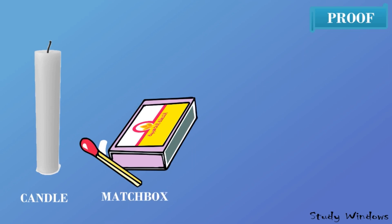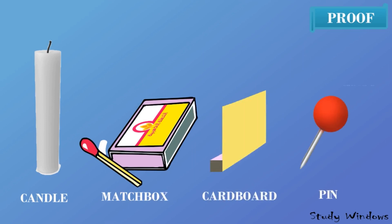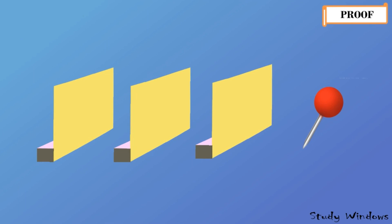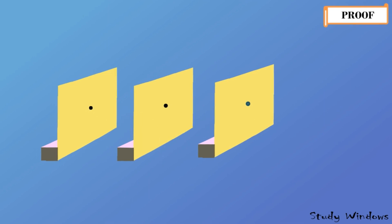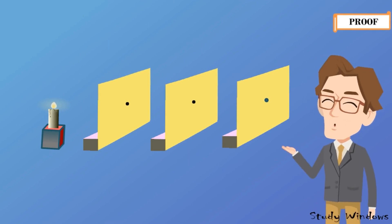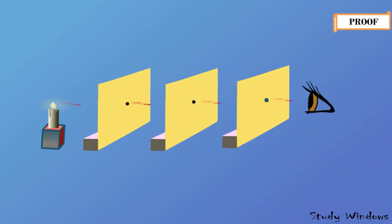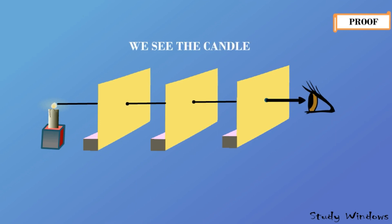Now we will prove it with another experiment. We take a candle, a matchbox with a matchstick, three cardboards, and one pin. We keep all three cardboards at equal distances in the same line, and with the help of the pin we make holes in all the cardboards at the same position. We keep the burning candle on the opposite side and try to see it through the holes — and surprisingly, we can see the candle, because light comes through the holes of the cardboards and reaches our eyes.